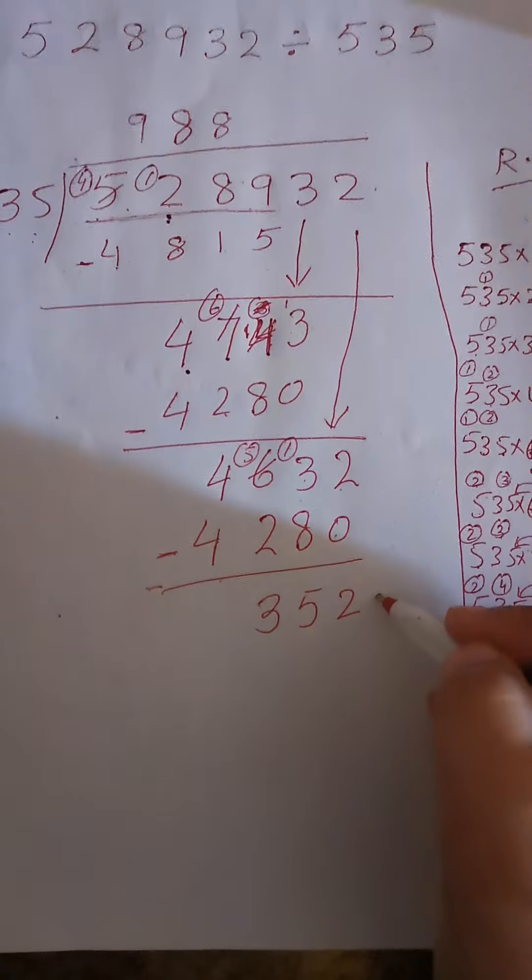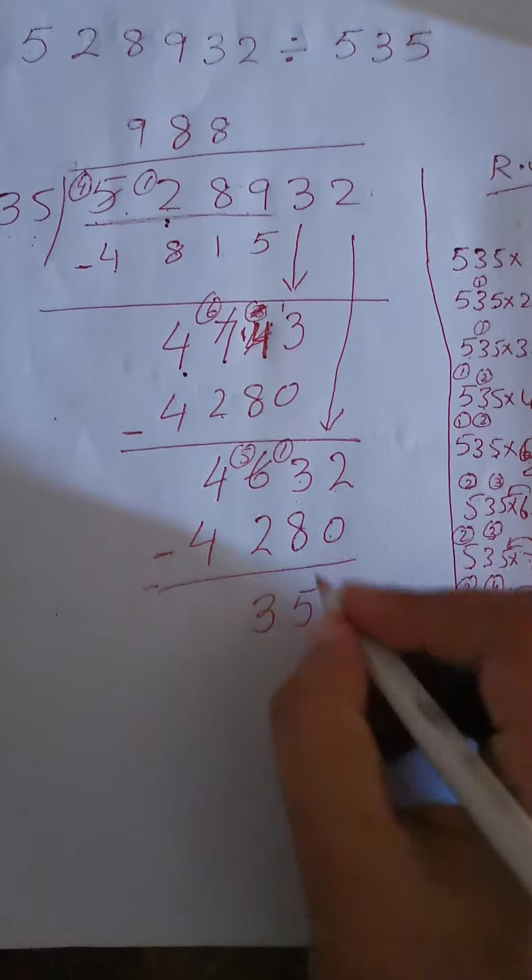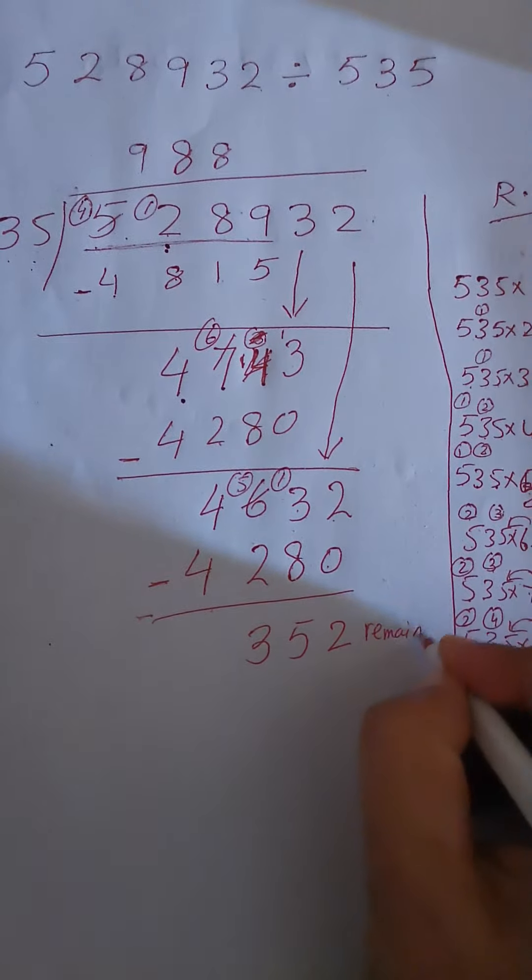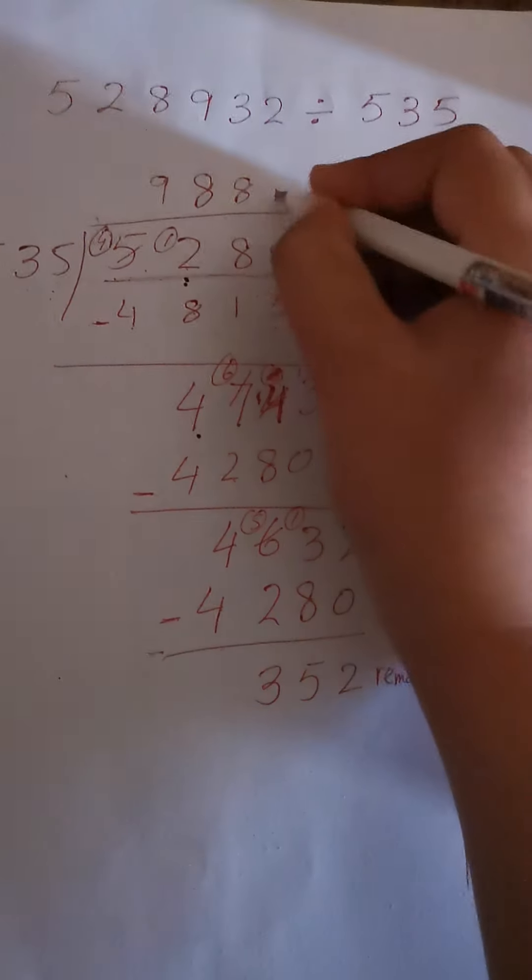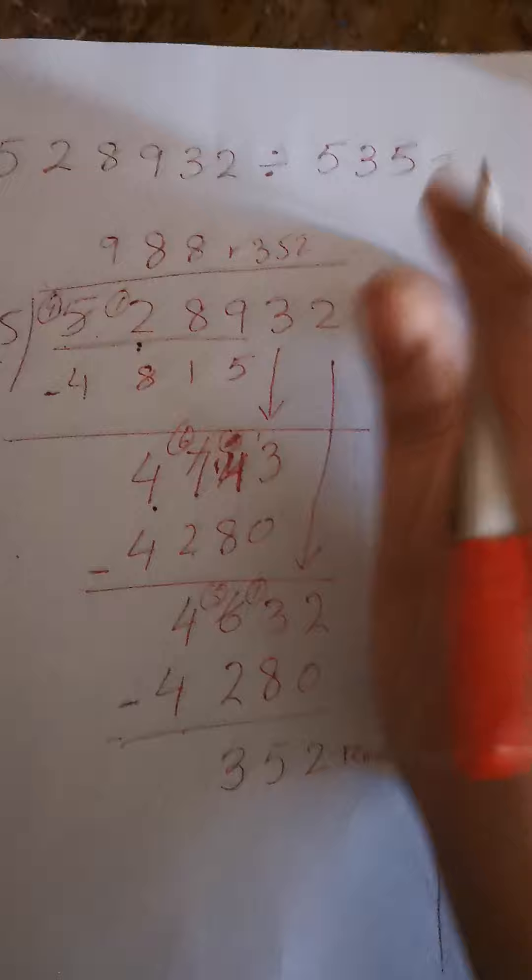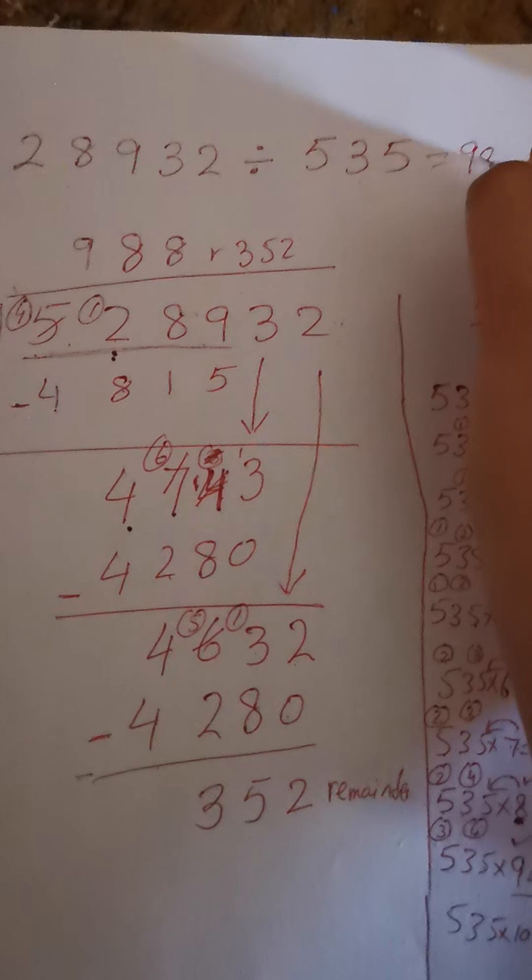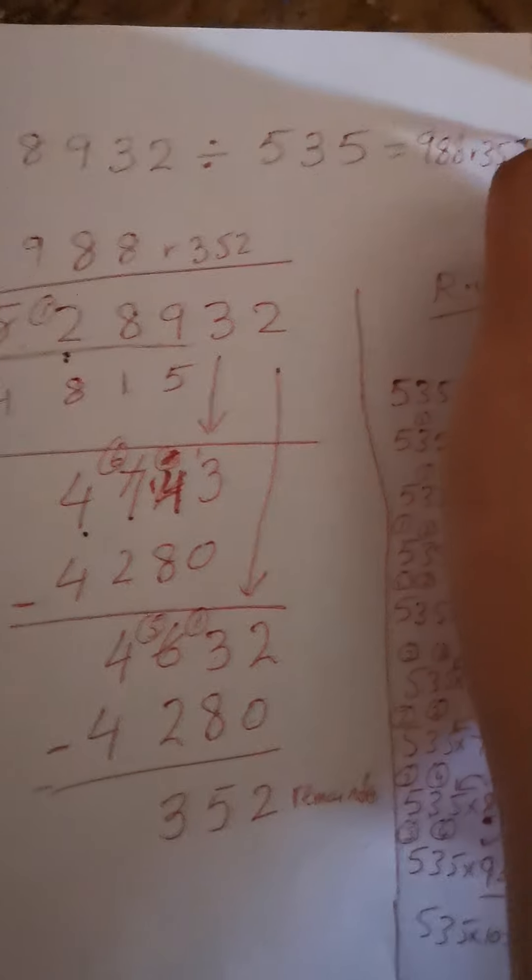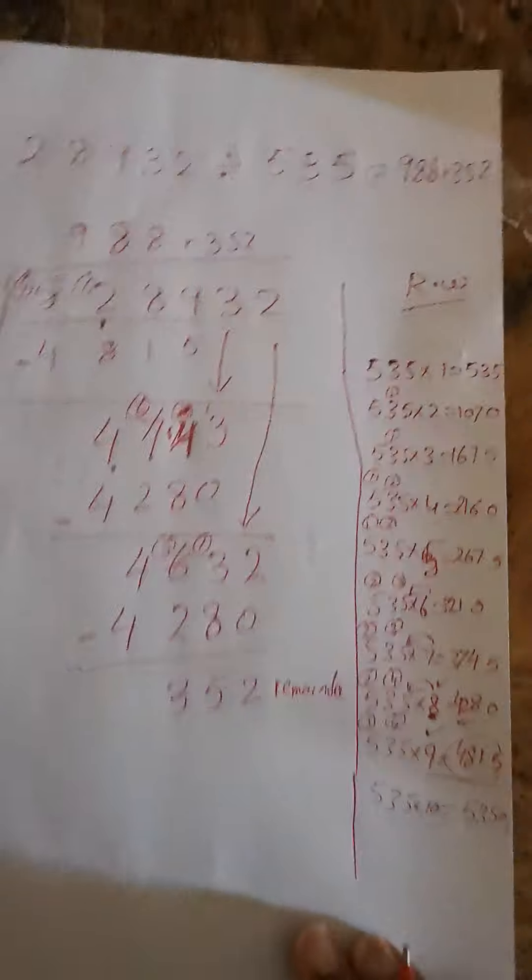We don't have any number to bring down, and this is the remainder. The remainder is 352. So what is the answer? The answer is 988 remainder 352. This is the solution.